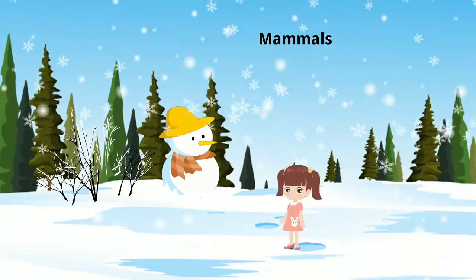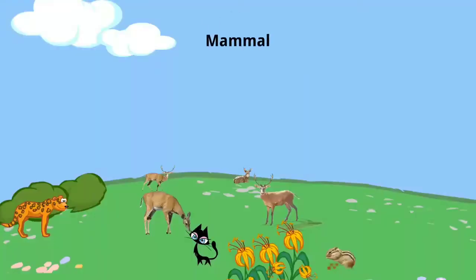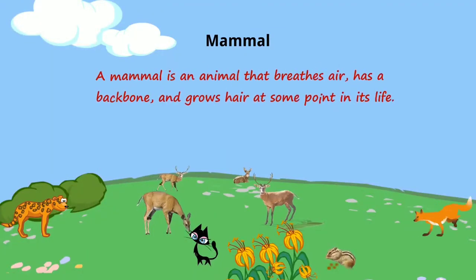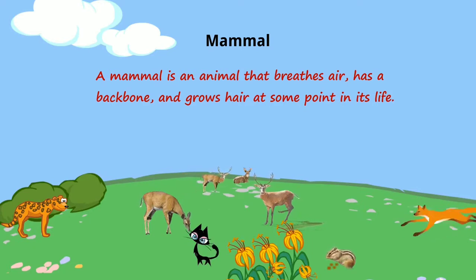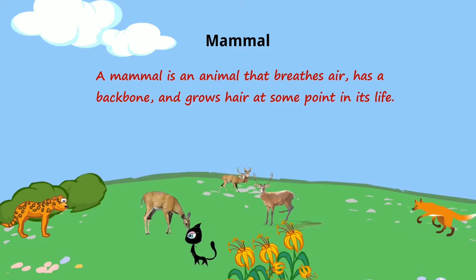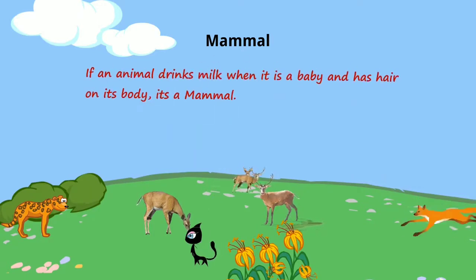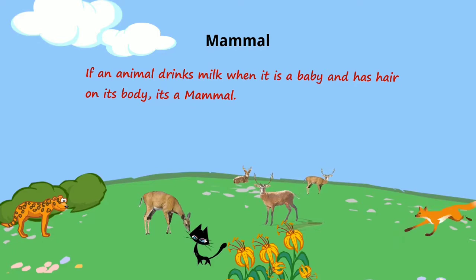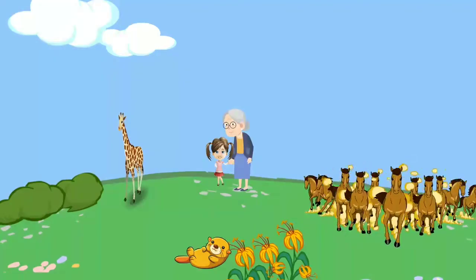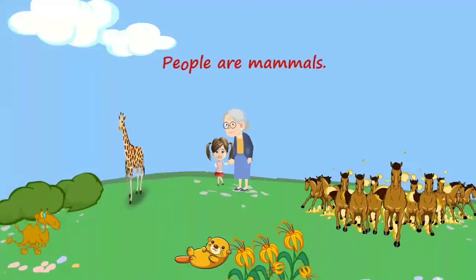Let's talk about mammals first. A mammal is an animal that breathes air, has a backbone, and grows hair at some point in its life. If an animal drinks milk when it's a baby and has hair on its body, it's a mammal. People are mammals.